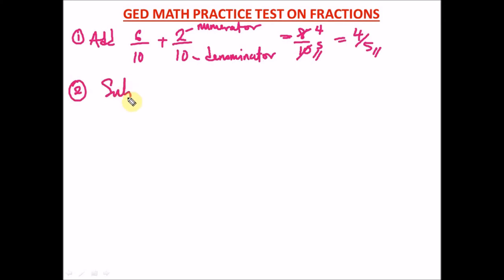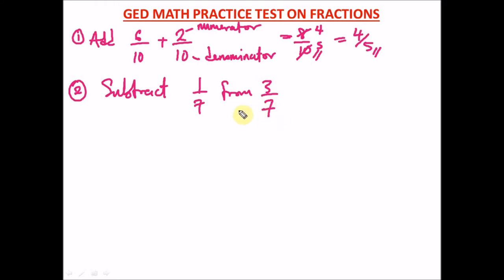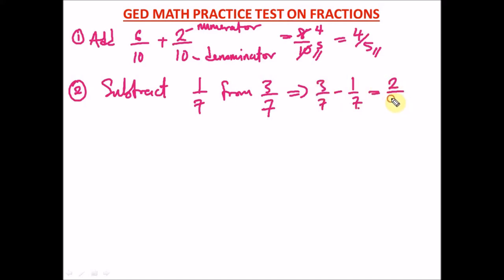Question two: subtract 1 over 7 from 3 over 7. This is also easy because you have the same denominator. It means 3 over 7 minus 1 over 7. Since we have the same denominator, we just say 3 minus 1, which is 2, giving us 2 over 7. That's the answer.